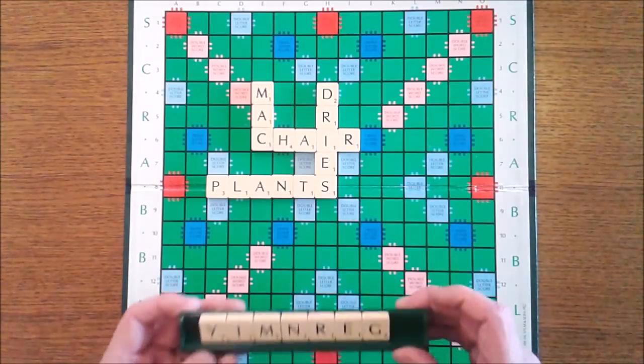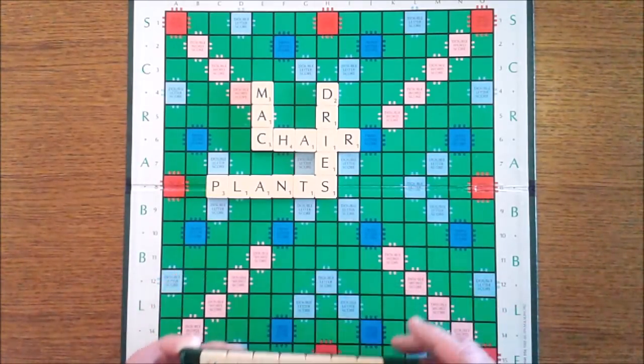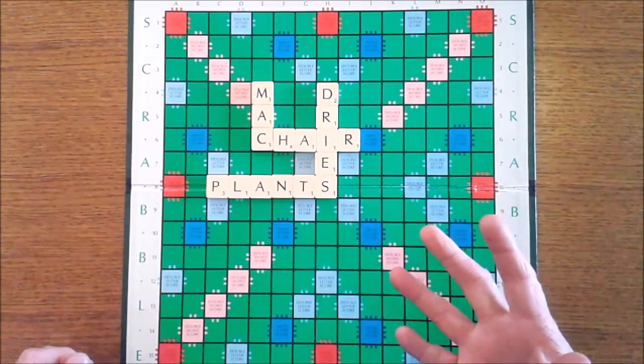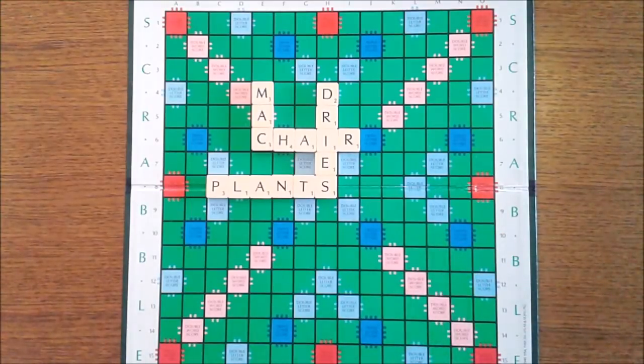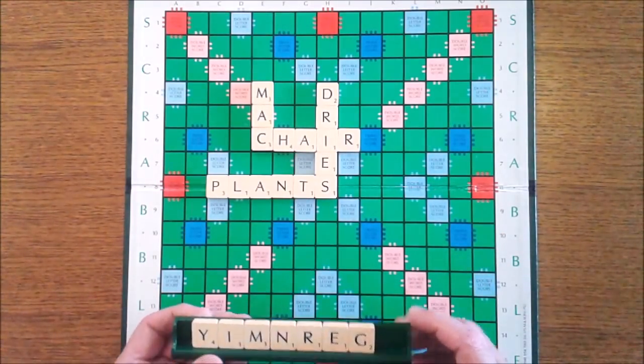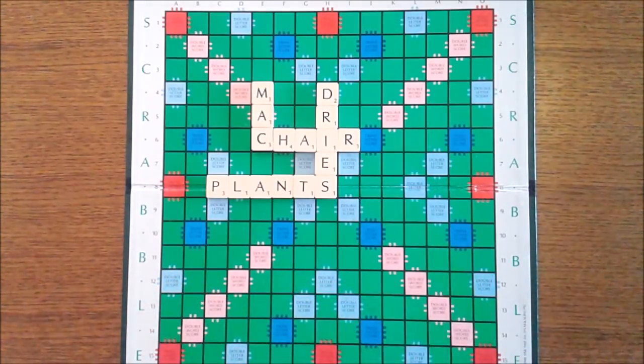Remember there's no point in having good prefixes and suffixes in your rack if you can't use them with words on the board. So it's a combination of looking at the board, looking for opportunities, and then seeing where the letters in your rack can fit into the place. Don't spend ages trying to find big words in your rack and then find that you can't place them on the board.